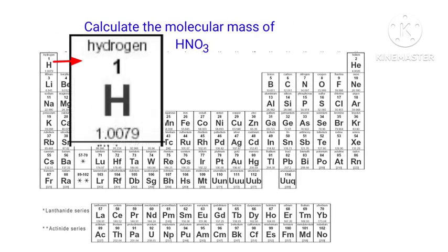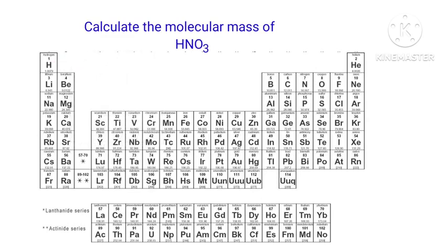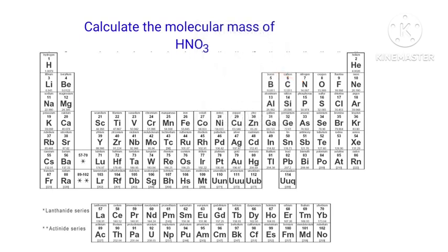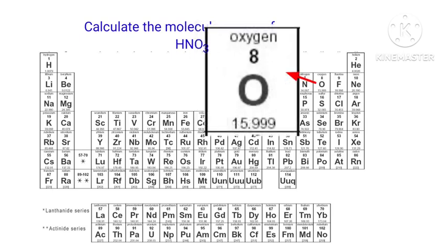The atomic mass of hydrogen is 1.0079. The atomic mass of nitrogen is 14.007. The atomic mass of oxygen is 15.999.